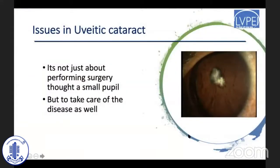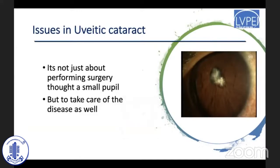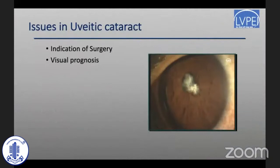The issues in uveitic cataract are not really just about performing surgery through a small pupil. We must also remember that the patient has a disease which we need to take care of. The first and second aspects to consider are the indication of surgery and what the vision prognosis is.